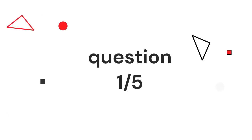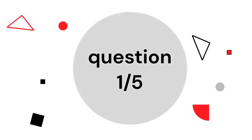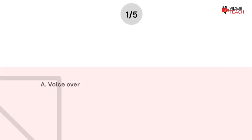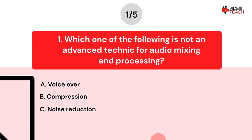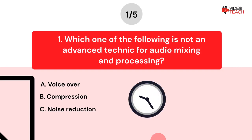Question number one. Which one of the following is not a main audio source? Option A: Voice over. Option B: Compression. Option C: Noise reduction. Now you have about 15 seconds to think about your answer.